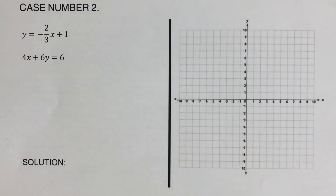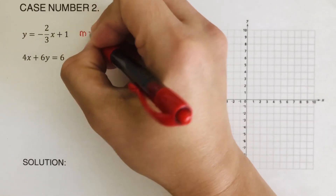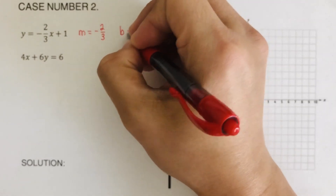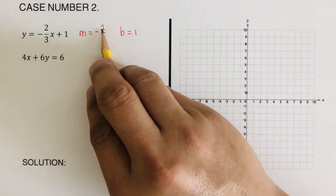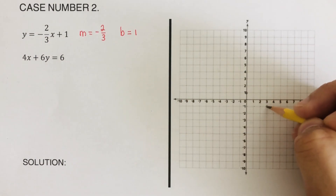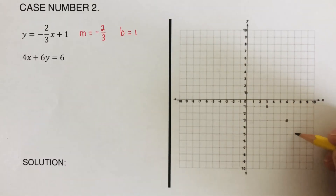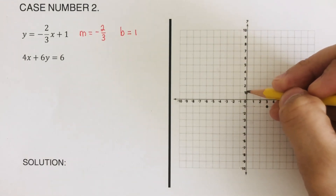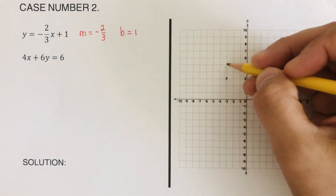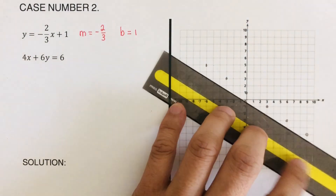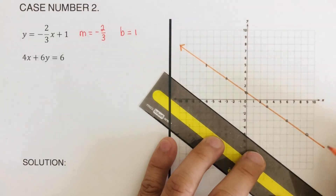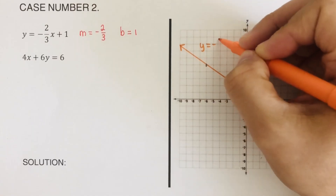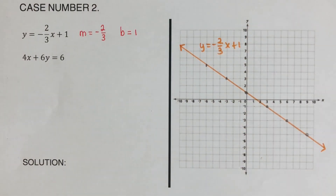Okay, we're looking at case two. We start by determining the slope and y-intercept of the first equation. The slope is negative two over three and the y-intercept b is one. We start plotting at y-intercept one, then since the slope is negative two over three, we go down two, right three — repeating this pattern — and also up two, left three. Then we draw the first line and label it y equals negative two over three x plus one.